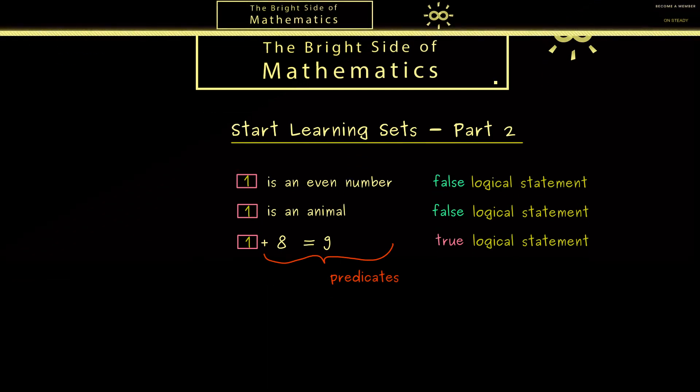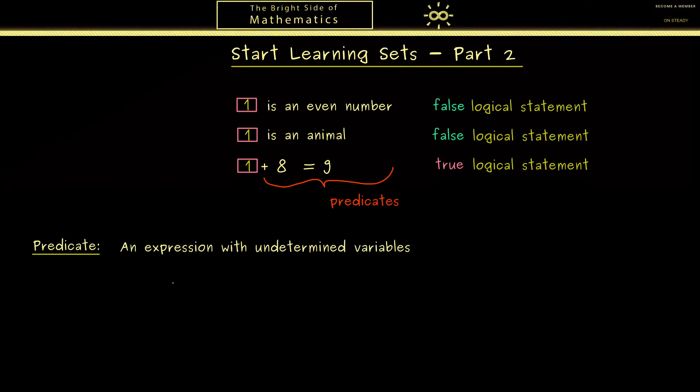And maybe we should write down the idea of such predicates. So we see a predicate as an expression with undetermined variables, and the variable was the box before, and of course we could have more than just one box in the sentence. And this expression now ascribes a property to objects that we put into the boxes. So we substitute a variable with something else, and when the something else does not contain any variables anymore we get out a logical statement.